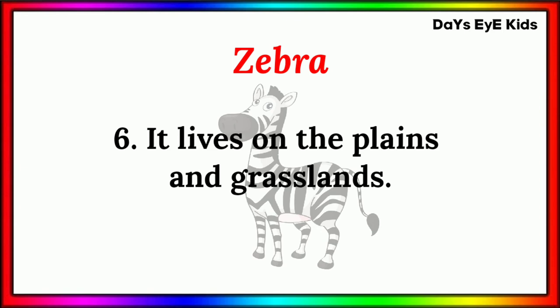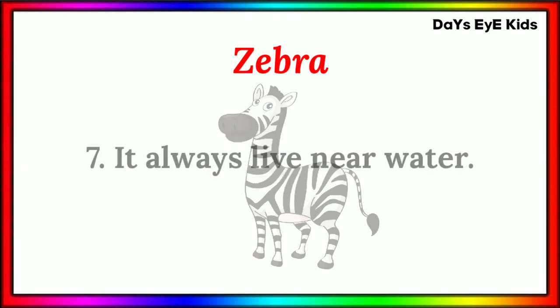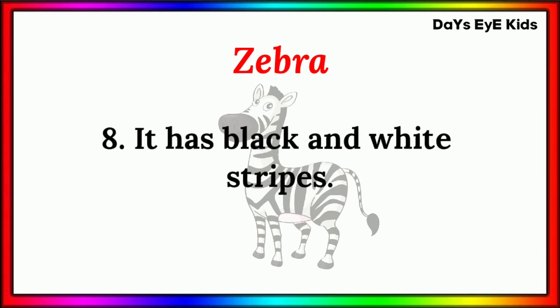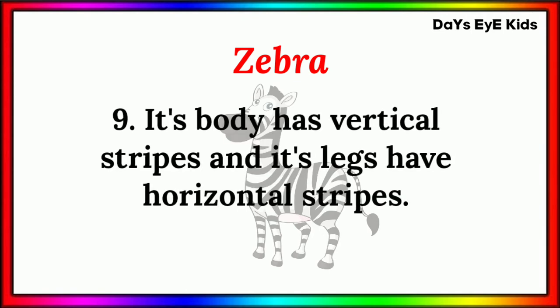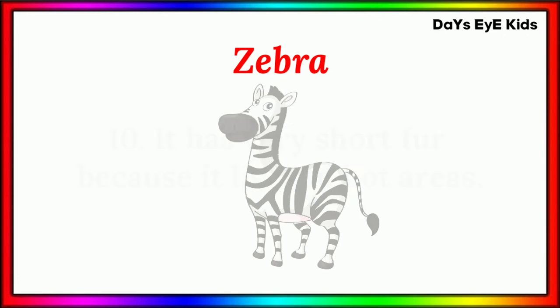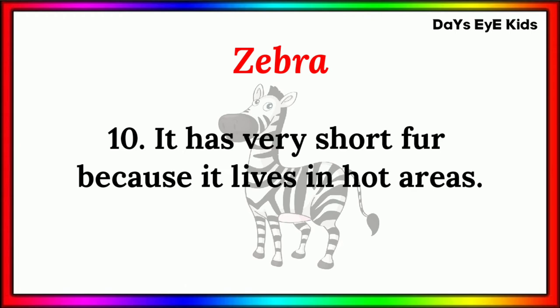It lives on the plains and grasslands. It always lives near water. It has black and white strips. Its body has vertical strips and its legs have horizontal strips. It has very short fur because it lives in hot areas.